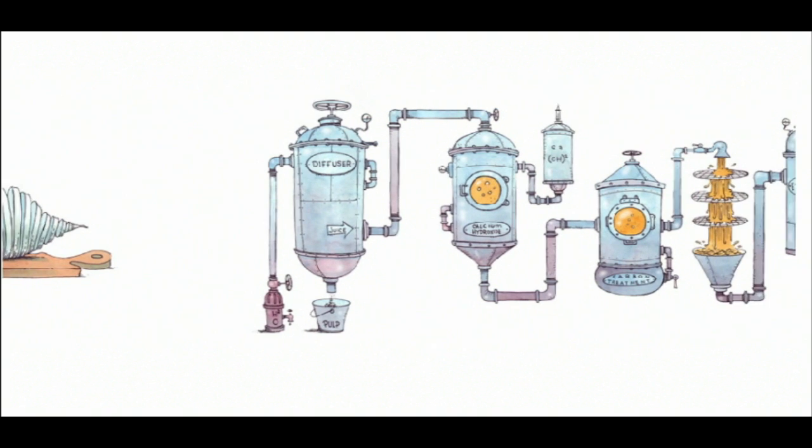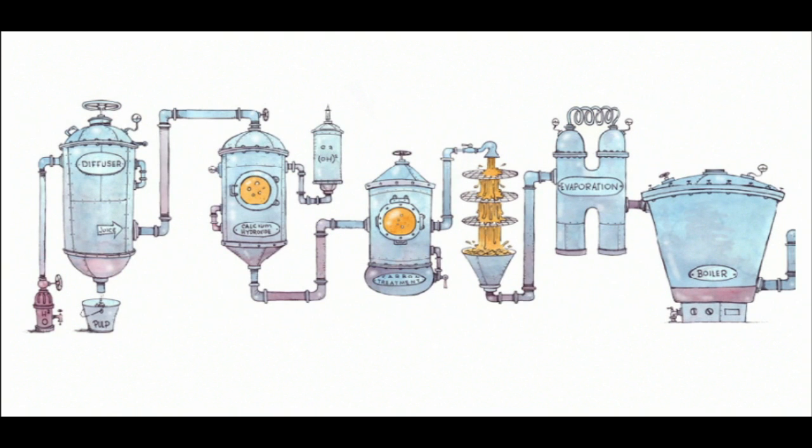After diffusion, the remaining pulp of the beet slices is pressed to extract the remaining sugar.